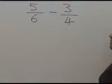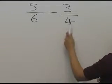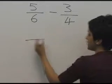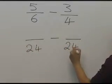The first thing you need to think about is making a common denominator, and the easiest way of doing that is to do 6 multiplied by 4. So you get 24 as the new denominators.